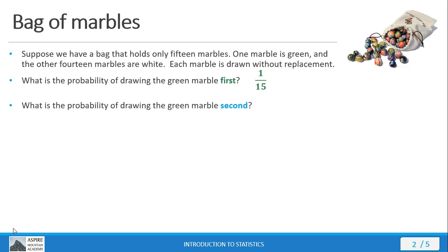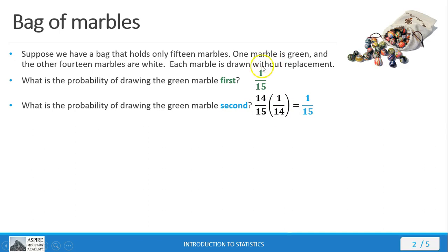Now what's the probability of drawing the green marble second? We calculate this as part over whole for each trial. For the first trial, we draw a white marble — if the second one is going to be green, the first one has to be white. There are 14 white marbles out of 15 total. Then for the second trial, there's 1 green marble, but we didn't put the first marble back, so there are only 14 marbles total. That gives us 1/14. We multiply: 14/15 × 1/14 — the 14s cancel — leaving us with 1/15, just what we had before.